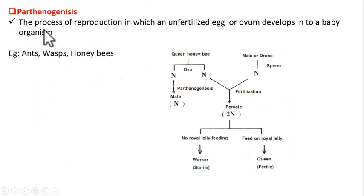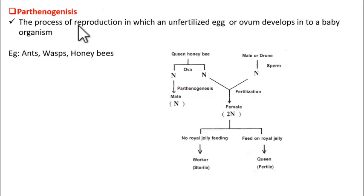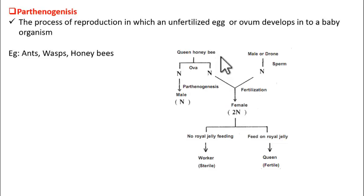Next is parthenogenesis. In this method, the female gametes — egg or ovum — develops into a baby without being fertilized by sperm. We know that when sperm and ovum fuse, they form a zygote, and from the zygote the baby is formed. But in this method, surprisingly, without fertilization, the egg or ovum directly develops into a baby organism. This process is called parthenogenesis. It is very surprising, but yes, it happens in nature. Examples are ants, wasps, and honeybees.